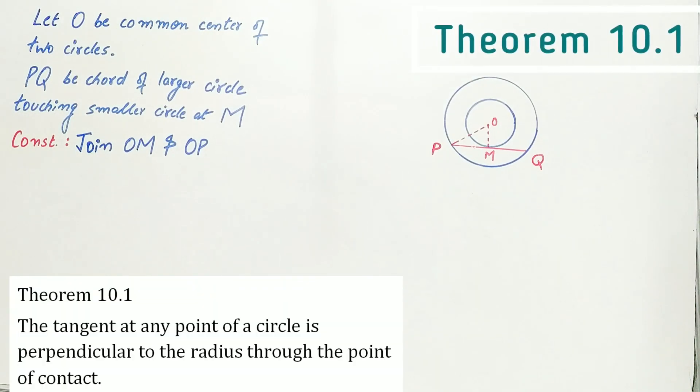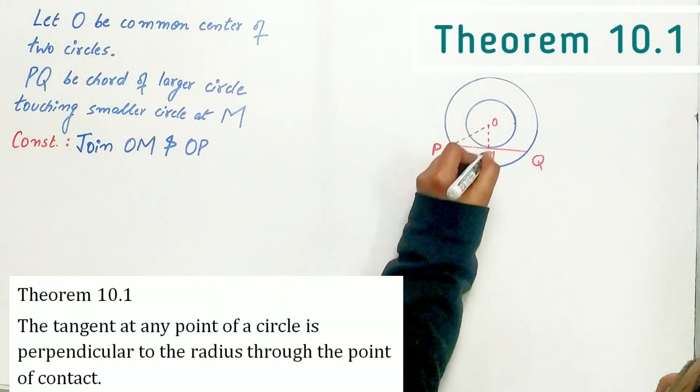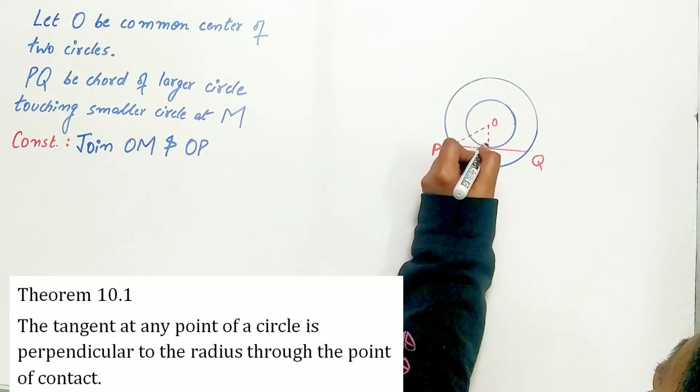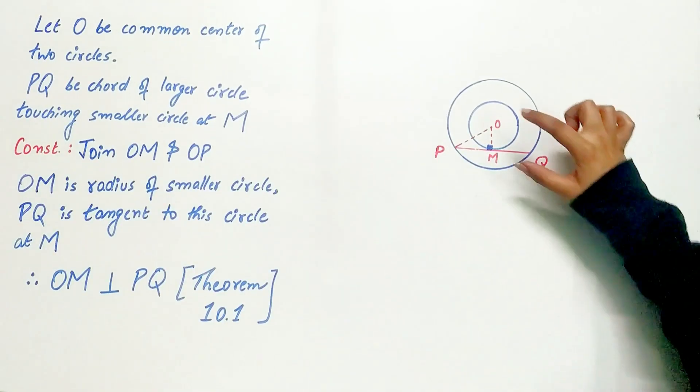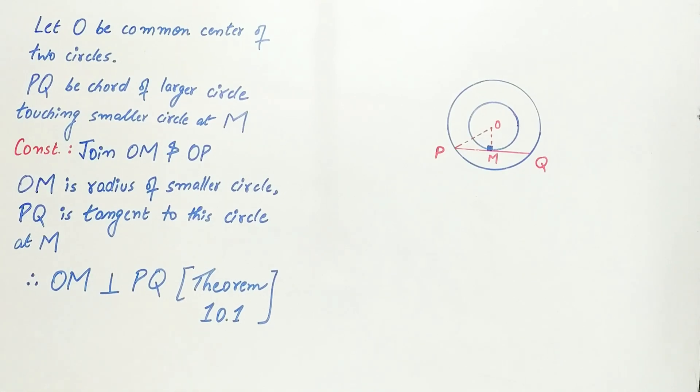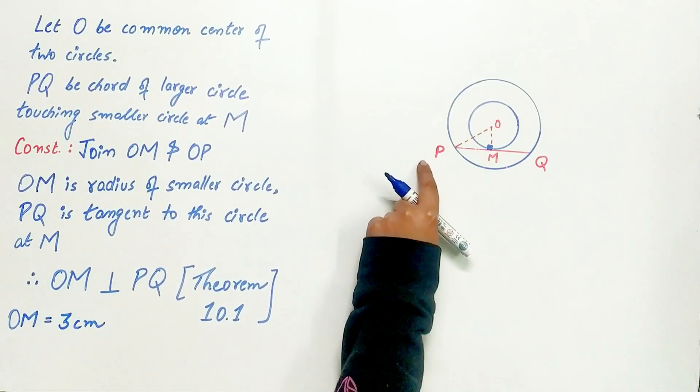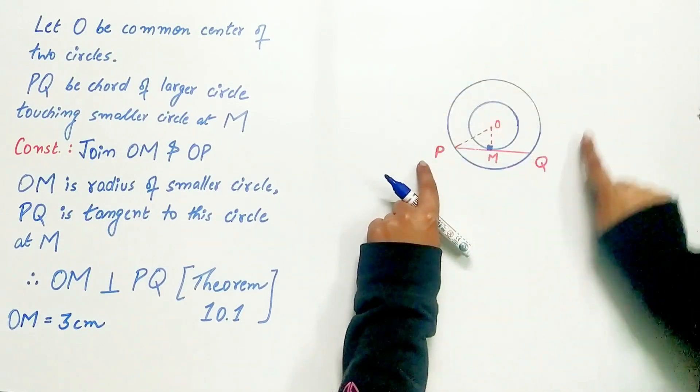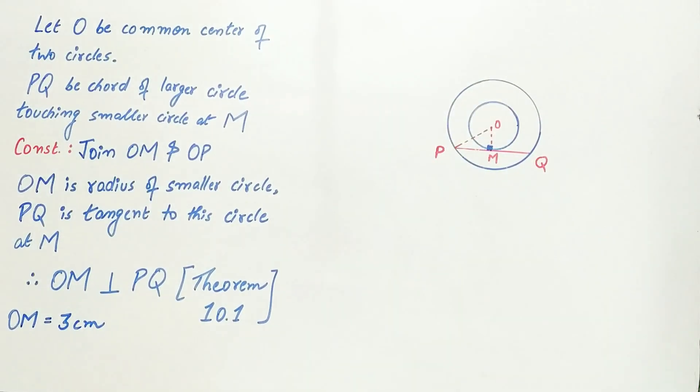And by our theorem 10.1, OM is perpendicular to PQ. We know OM is radius of smaller circle, it is equal to 3 cm, and OP is the radius of larger circle and it is equal to 5 cm.